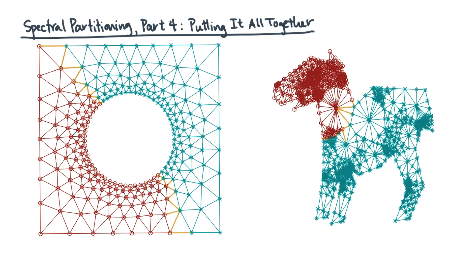Here are two examples of what the spectral partitioning algorithm produces on two graphs. Hey, someone should make a t-shirt out of these.